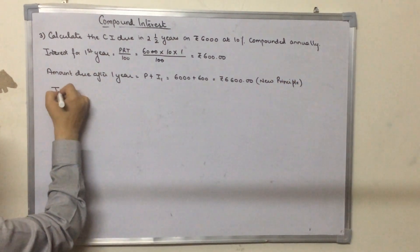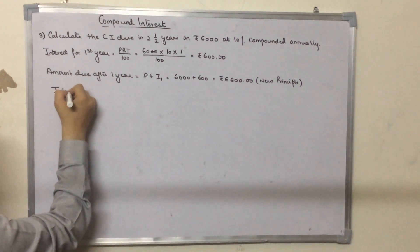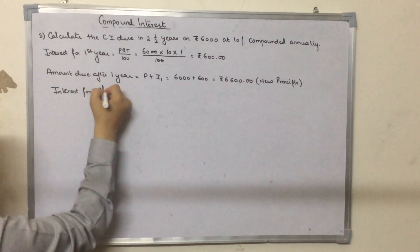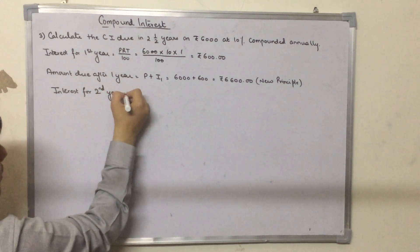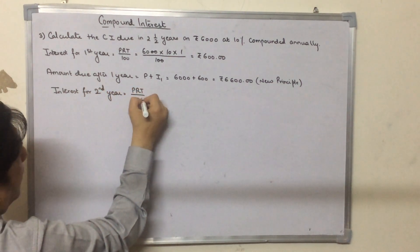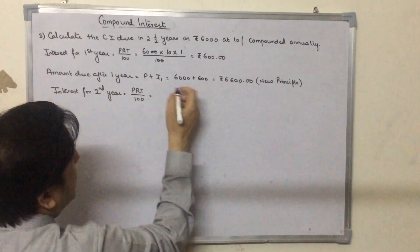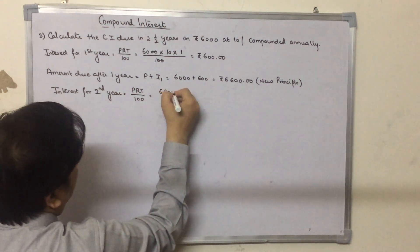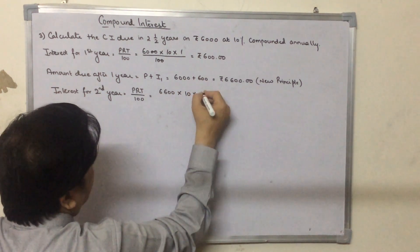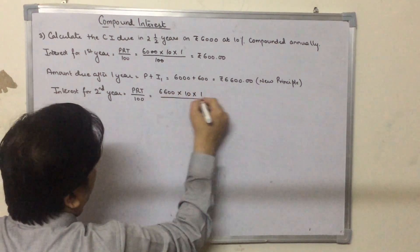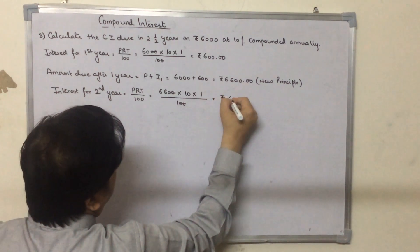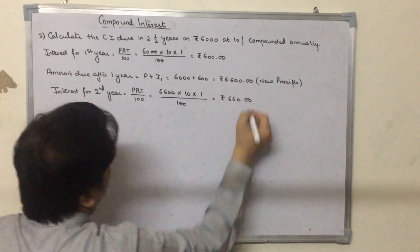Now we calculate the interest for the second year. This is again PRT upon 100. Now the principal is 6600 rupees, the rate of interest is still 10%, and the time is 1 upon 100. This gives 660 rupees.